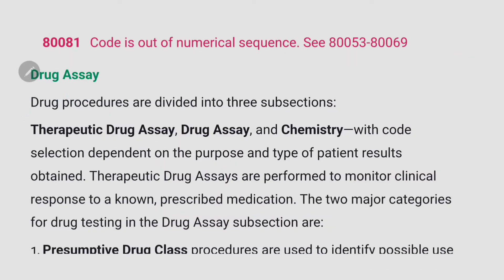After organ or disease oriented panels, we have drug assays. The drug procedures are divided into three subsections: therapeutic drug assay, drug assay, and chemistry.